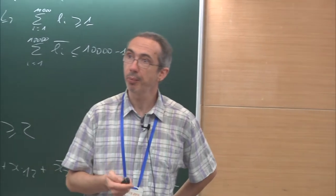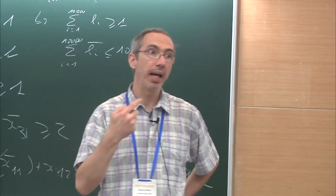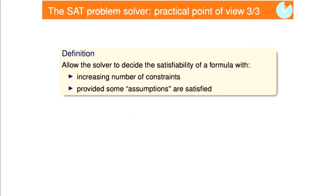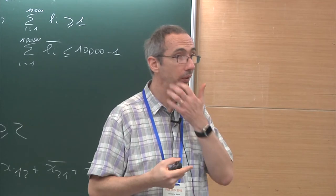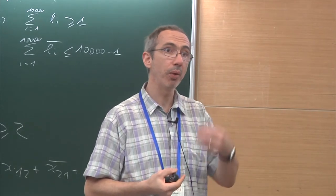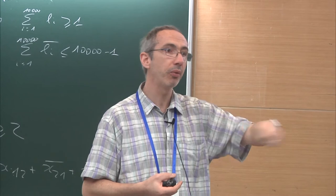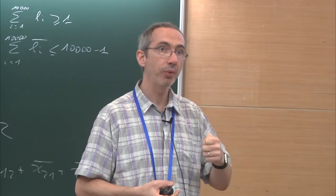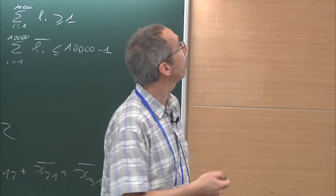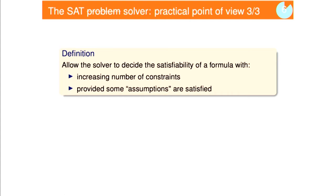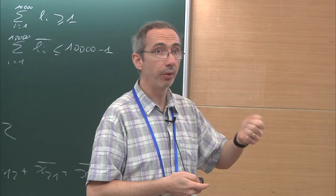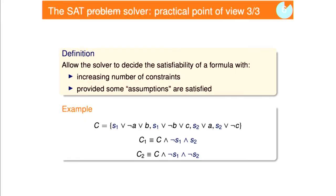Typically, all the major improvements in SAT technology and SAT algorithms have been made because people have been using this. There is a last part: you can add assumptions — new variables, typically one variable per clause — and then ask, given those assumptions, given the fact that you suppose those literals to be true or false, is it satisfiable or not? This allows you to retrieve information in terms of your selectors.